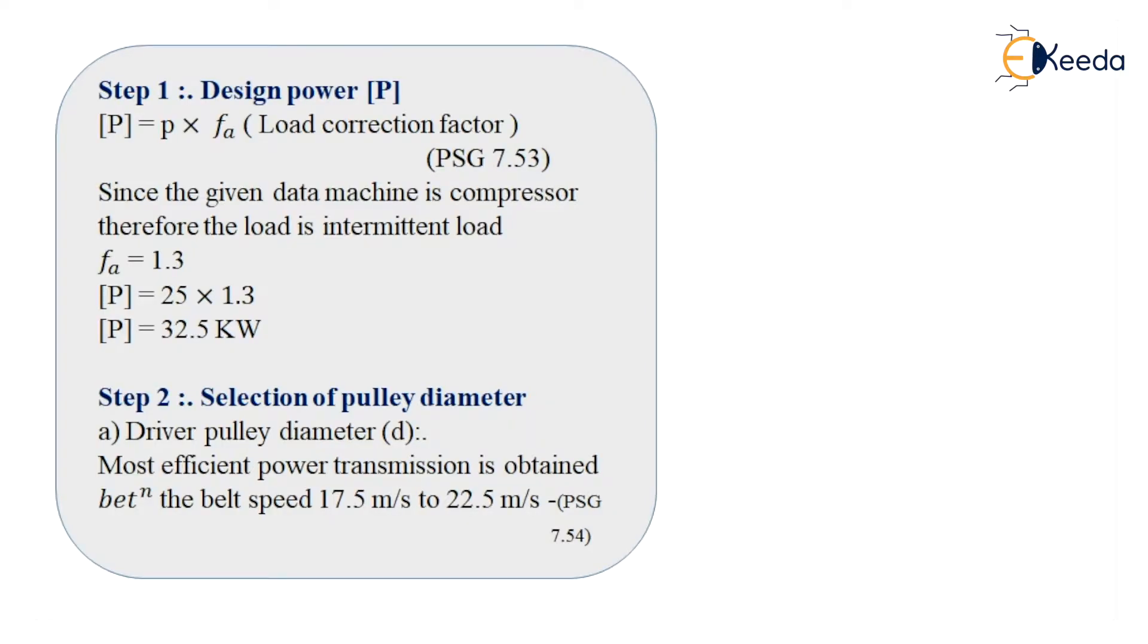Step number 1: To calculate design power. It is given as P dash is equal to P multiplied by FA, where FA is load correction factor. Since the given data machine is compressor, therefore the load is going to be intermittent load. So I select FA as 1.3. So I can write down P dash is equal to 25 multiplied by 1.3. Therefore the value of design power is 32.5 kW.